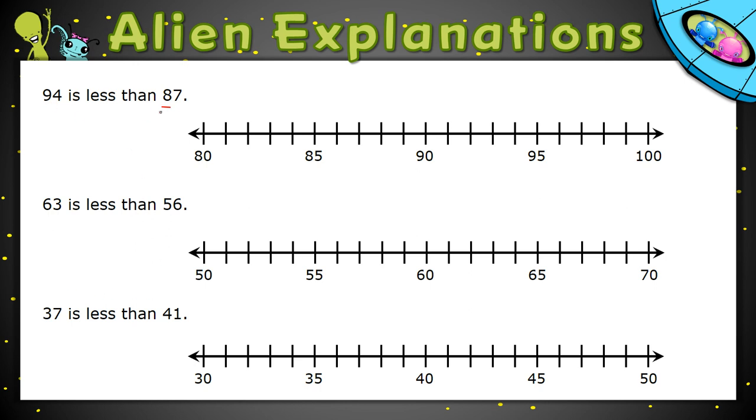So let's look at 87 and 94. Here is 87, and here is 94. As you move to the right on a number line, numbers get bigger, and as you move to the left, numbers get smaller. So you can think about 87 and 94 and how they compare.